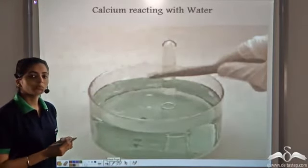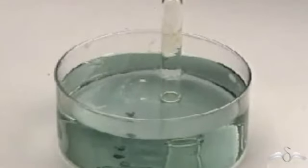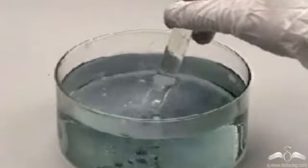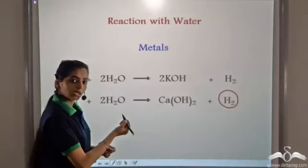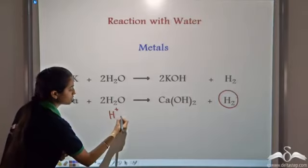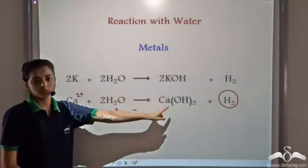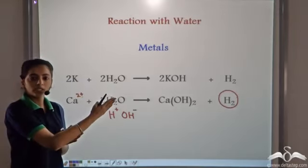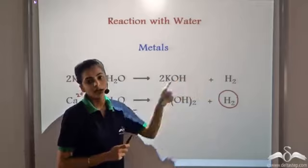Now let's look at the reaction of calcium with water. We put a piece of calcium in water — bubbles of gas are formed, which can be collected in a test tube. When calcium reacts with water, it forms calcium hydroxide and hydrogen gas is released. H₂O exists in the form of H⁺ and OH⁻, and Ca²⁺ reacts with OH⁻ to form the corresponding hydroxide, while hydrogen gas is released. Similarly, potassium reacts with water to form the corresponding hydroxide and hydrogen gas. So when metals react with water, they form the corresponding hydroxide and hydrogen gas is released.